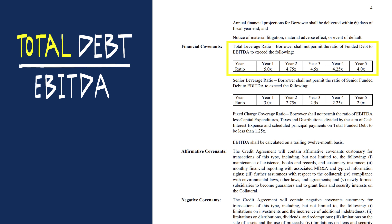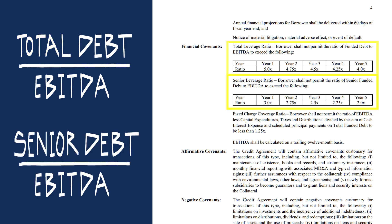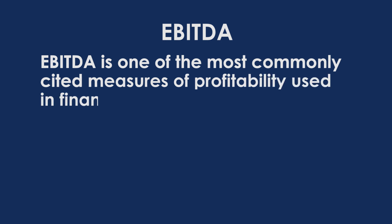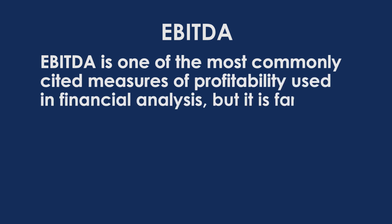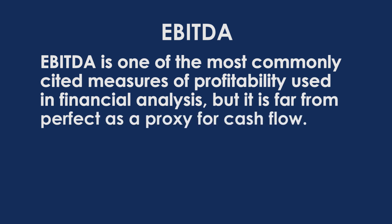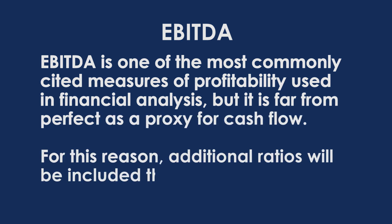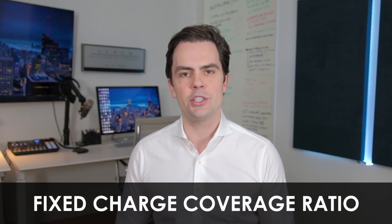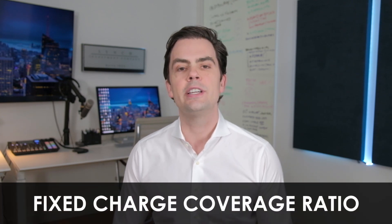In the former, you would divide the total amount of debt by EBITDA, and in the latter, you would divide only senior debt by EBITDA. EBITDA is one of the most commonly cited measures of profitability used in financial analysis. For this reason, additional ratios will be included that get a little more granular. The fixed charge coverage ratio is used to measure a company's ability to cover its fixed charges, which can be defined largely as debt-related payments, but it can include additional obligations as well.